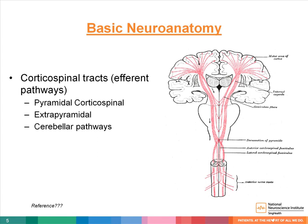The efferent pathway, also known as the descending pathway, involves motor tracts which originate from the brain or brainstem, descending down to the spinal cord to control motor neurons. Some of the efferent pathways are the pyramidal corticospinal tract, extrapyramidal, and cerebellar pathways. The corticospinal tract originates from the primary motor cortex, passes through the internal capsule, enters the cerebral peduncle in the midbrain, then to the pons and medulla, where the fibers decussate and descend into the spinal cord, terminating in the ventral horn. From there, the lower motor neuron supplies the muscles of the body.